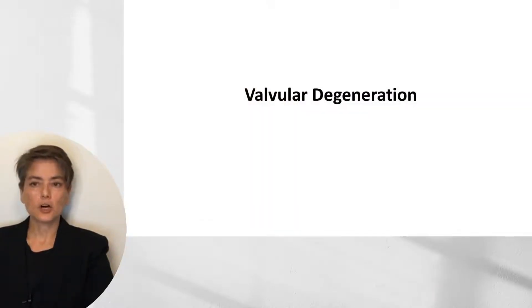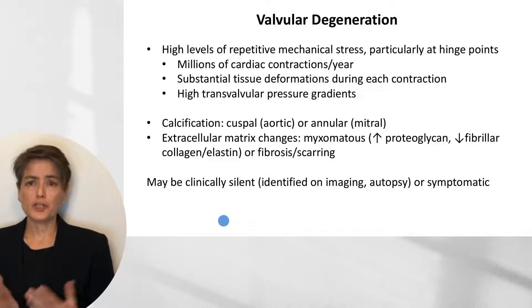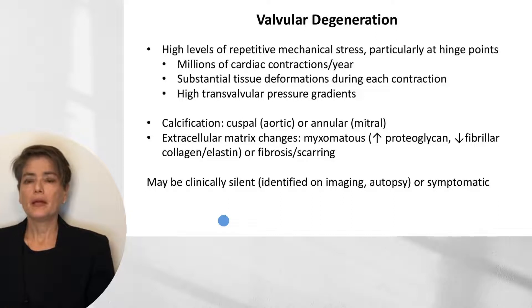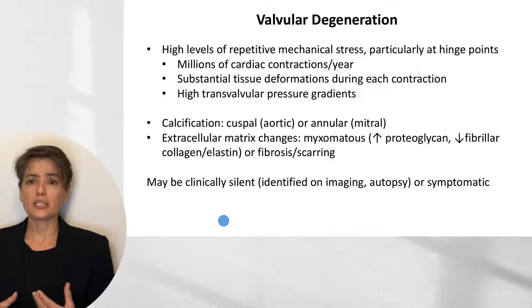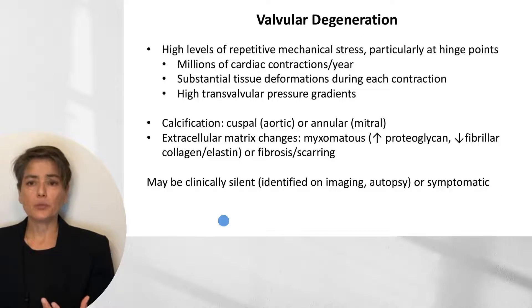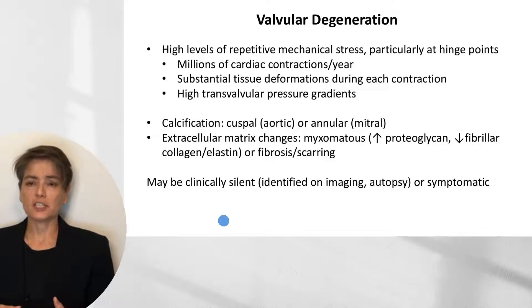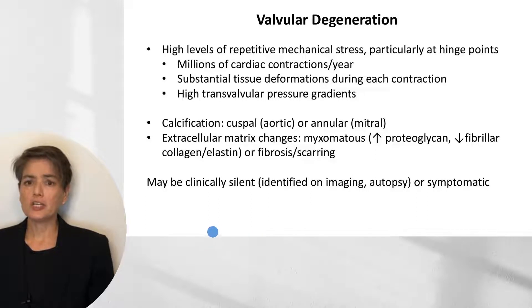The next condition to discuss is valvular degeneration. We see degeneration because of high levels of repetitive mechanical stress, particularly at the hinge points—millions of cardiac contractions per year with substantial tissue deformations and high transvalvular pressure gradients. This can cause calcification of the cusps or annulus, extracellular matrix changes such as myxomatous change (increased proteoglycan with decreased fibrillar collagen and elastin), or fibrosis and scarring. Valvular degeneration may be clinically silent or symptomatic.